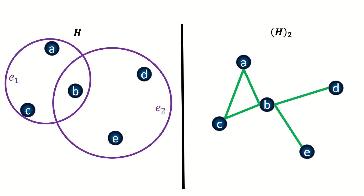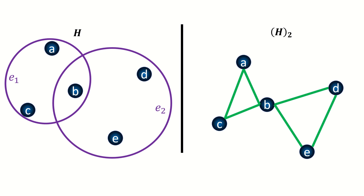In the hypergraph, vertex c shares an incident edge e_1 with vertices a and b. Vertex c also shares an incident edge e_2 with vertices b and e. So vertex d is adjacent to vertices b and e. Finally, vertex e in the hypergraph shares an incident edge e_2 with vertices b and d, so in the two section vertex e is adjacent to vertices b and d.